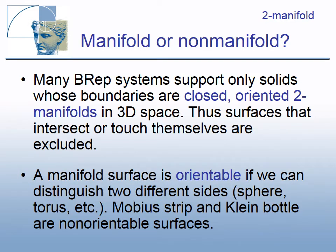Many BREP systems support only solids whose boundaries are closed, oriented two-manifolds in 3D space. Thus, surfaces that intersect or touch themselves are excluded. A manifold surface is orientable if we can distinguish two different sides — for example, a sphere or a torus. The Möbius strip and the Klein bottle are non-orientable surfaces.